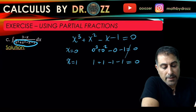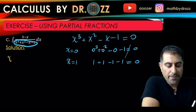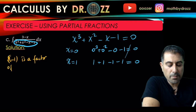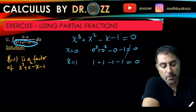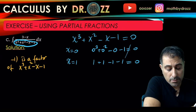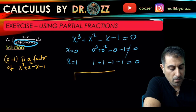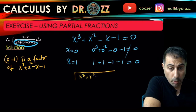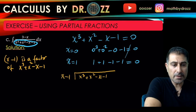Since x equals one gives zero, that means (x minus one) is a factor of x cubed plus x squared minus x minus one. So I can do long division to find the other quadratic part of the cubic. If you don't remember long division, this example should be a good run-through.